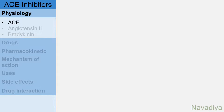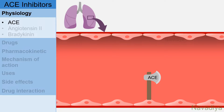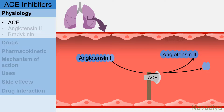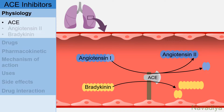First, physiology. As we have seen in the video on the renin-angiotensin system, angiotensin converting enzyme is present on the luminal side of vascular endothelium, especially in lung vasculature. This enzyme converts angiotensin 1 into angiotensin 2. Another substrate for this enzyme is bradykinin, a vasodilator peptide, which angiotensin converting enzyme inactivates by breaking it down.